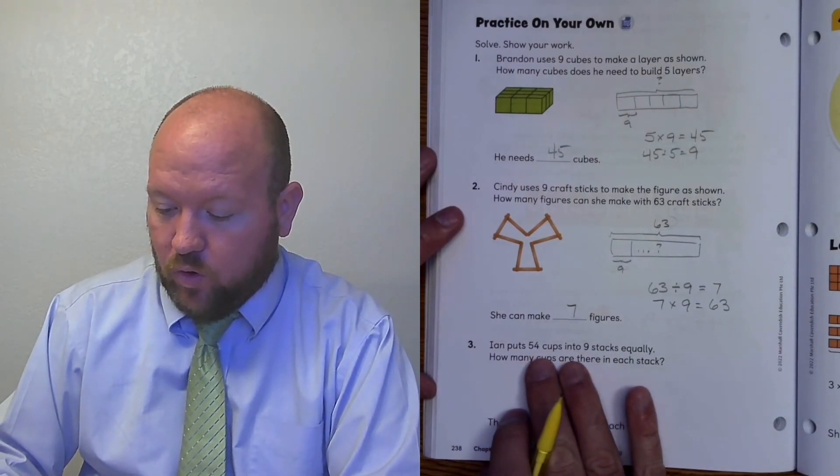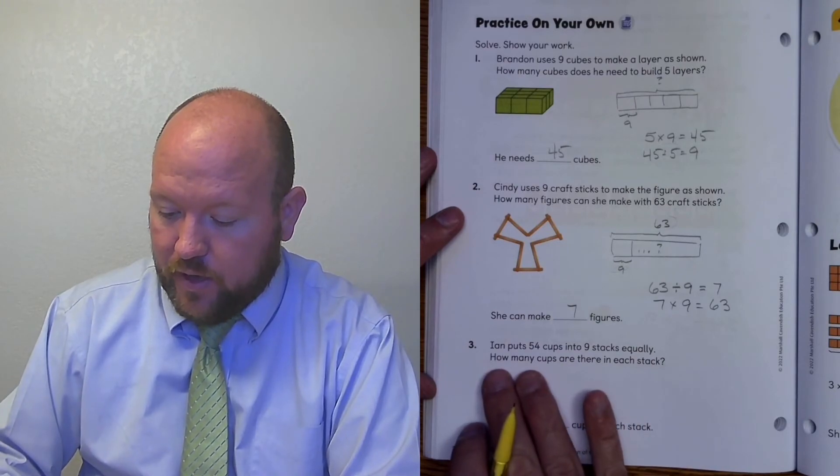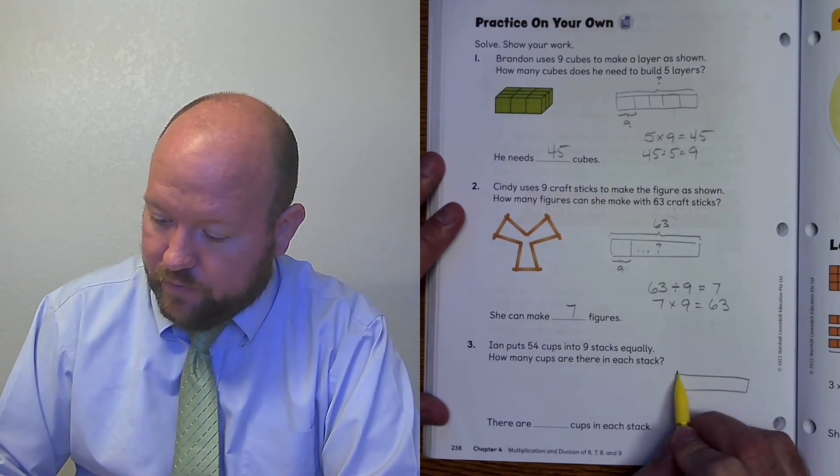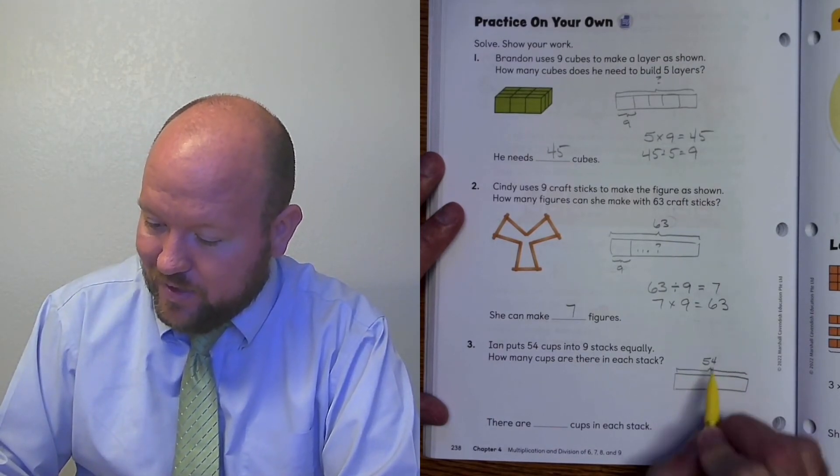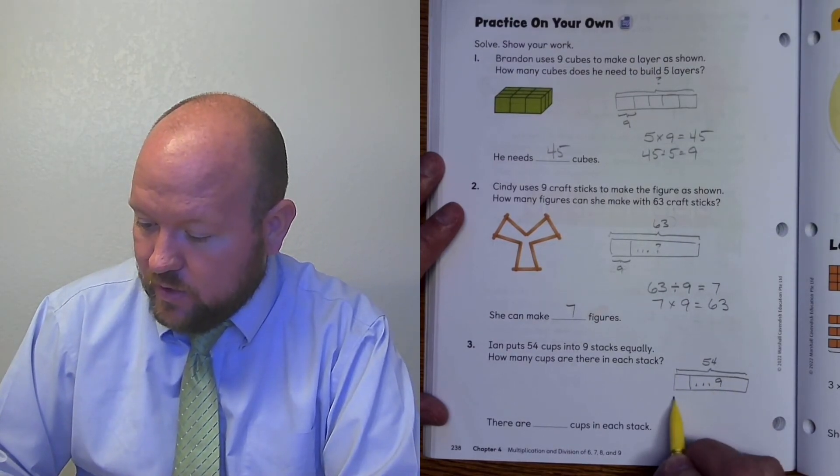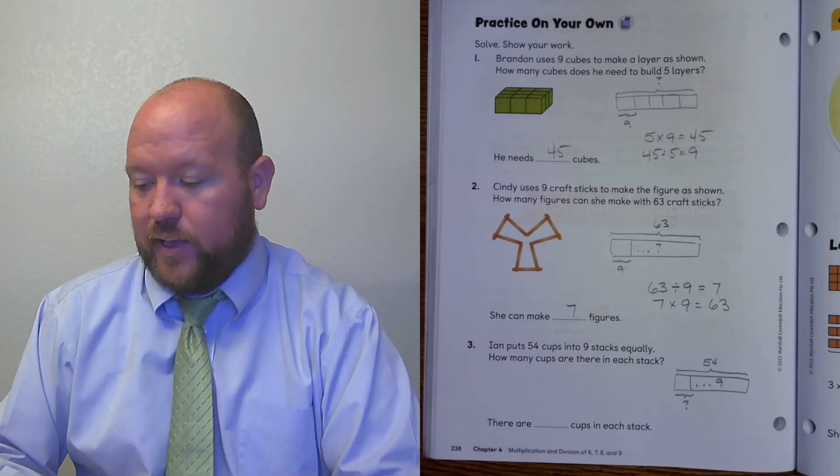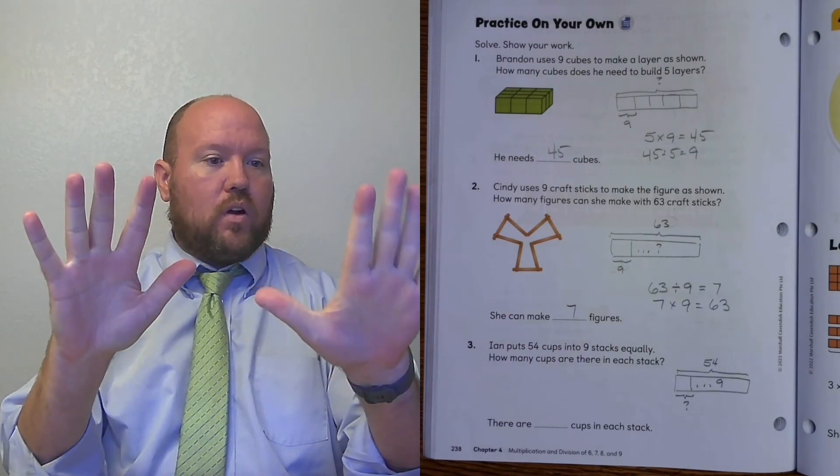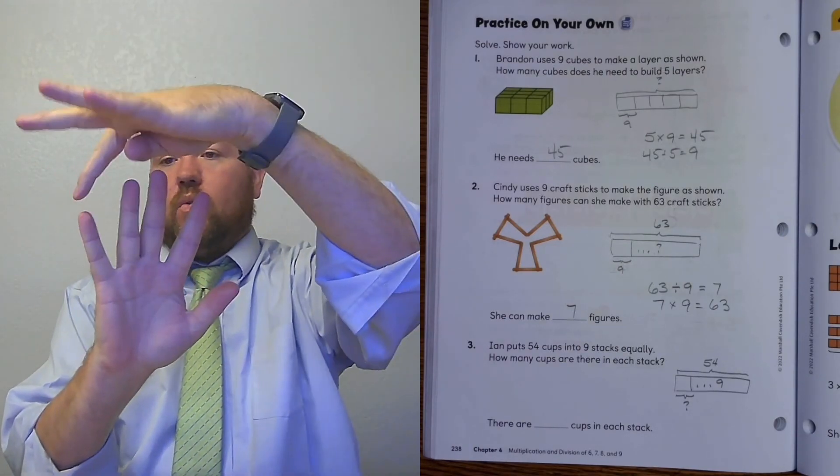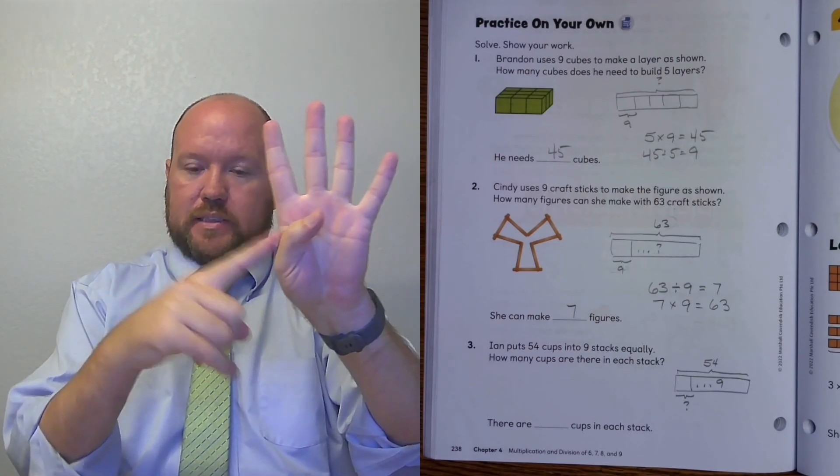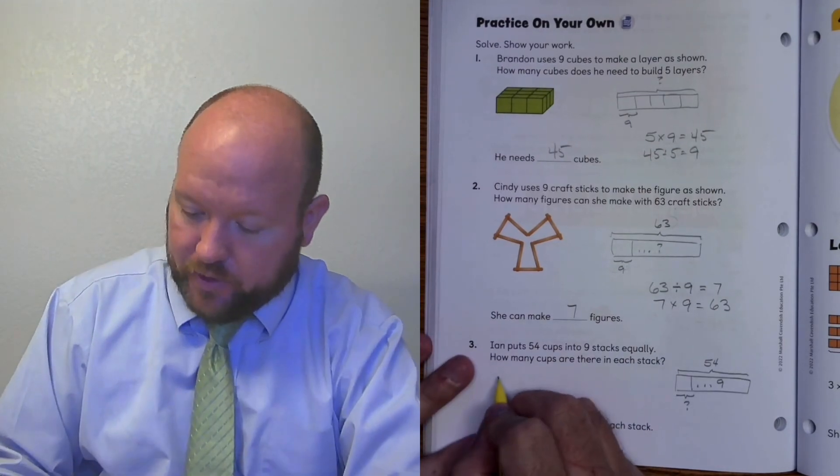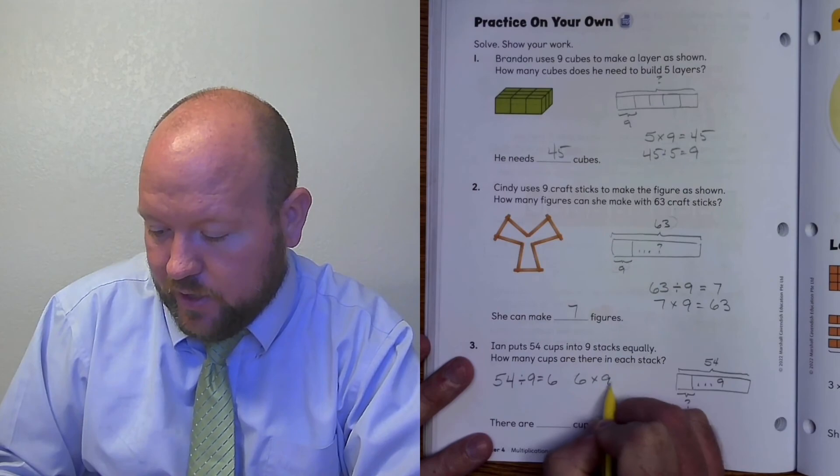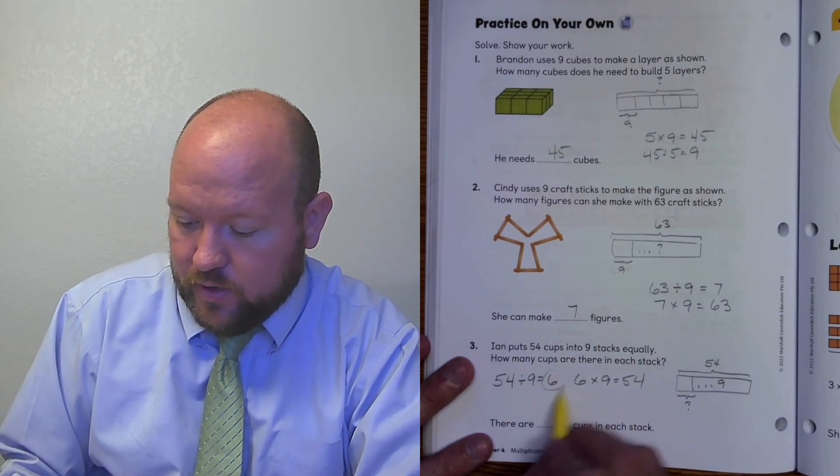On the last one, Ian puts 54 cups into 9 stacks equally. How many cups are there in each stack? So to model this, we're going to have 54 cups, 9 stacks, and how many goes in each stack equally. So 54 divided by 9. So I need a 50 and a 4. So that means I've got to put my thumb down. What finger did I put down? 1, 2, 3, 4, 5, 6. I put the 6th finger down. So that means that 54 divided by 9 equals 6. And that's true because 6 times 9 equals 54. So 6 cups.